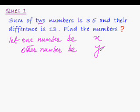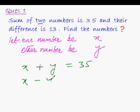Now that we have assigned the variables, the next step would be to create the equations. And since here there are two variables, we need two equations. Sum of two numbers is 35. That means x plus y is equal to 35. And their difference is 13. So, x minus y is equal to 13.